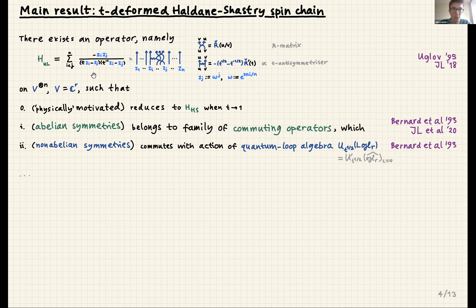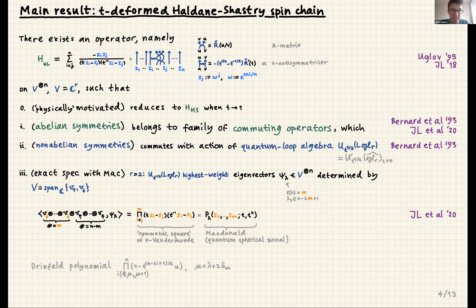The potential now has a t-Vandermonde and a t^{−1}-Vandermonde factor in the denominator. This formula was not guessed and then checked — it was derived by demanding these symmetry properties to hold. As a bonus, we get an exact description of the spectrum with McDonald polynomials. For r=2, the spectrum is completely described by quantum loop algebra highest weight eigenvectors, where instead of just the square of the Vandermonde we have the t-deformed symmetric square of the Vandermonde factor, and where we had Jack polynomials we now have the corresponding quantum spherical zonal special case of McDonald polynomials.